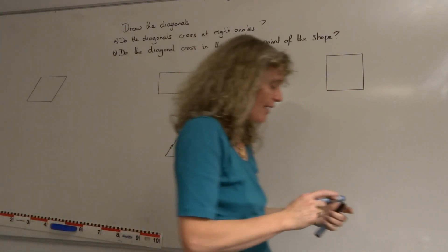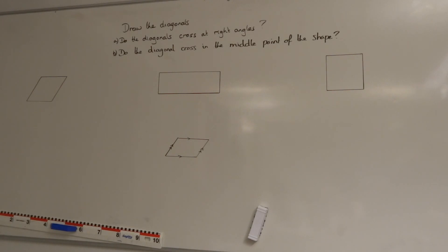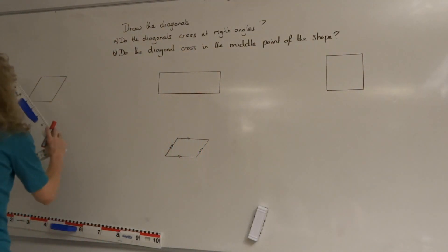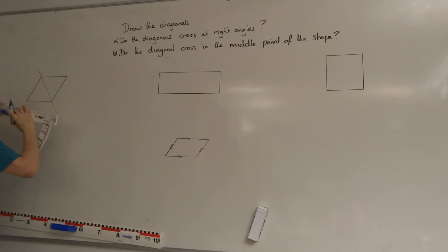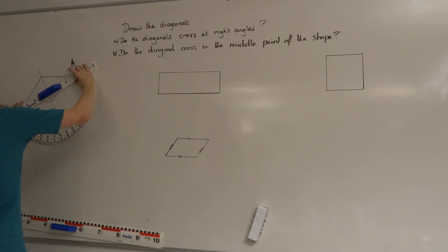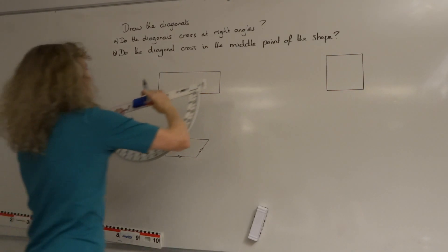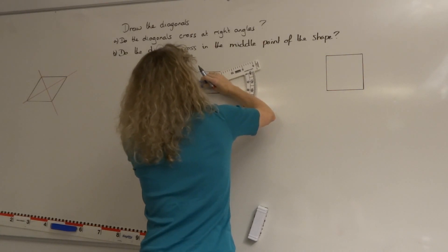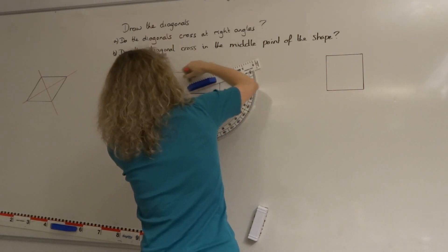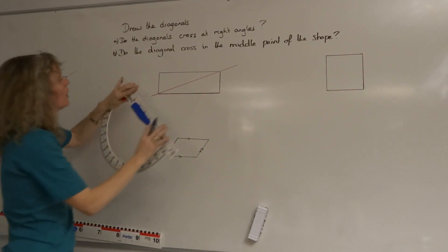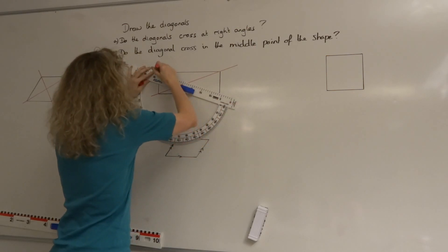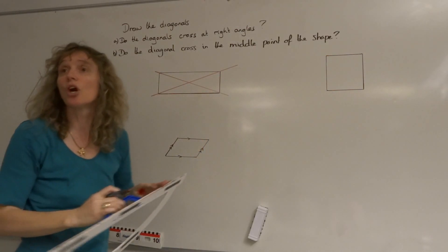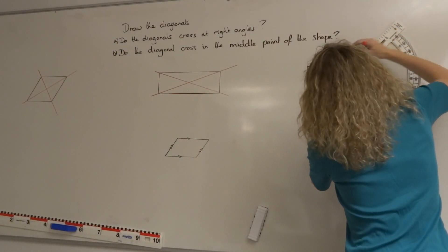The question here is: draw the diagonals and investigate what happens with them. We'll draw in red. We draw a diagonal by going from one corner to the other corner, cutting through as neatly as we can. A diagonal is always going from one corner to the other corner. In a circle, it must go from one edge to the other edge through the middle point — so diagonals go through middle points.